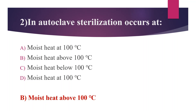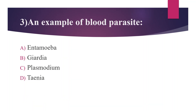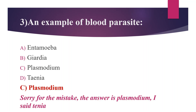Third question: an example of a blood parasite. Option A: Entamoeba. Option B: Giardia. Option C: Plasmodium. Option D: Taenia. The answer is Option C, Plasmodium.